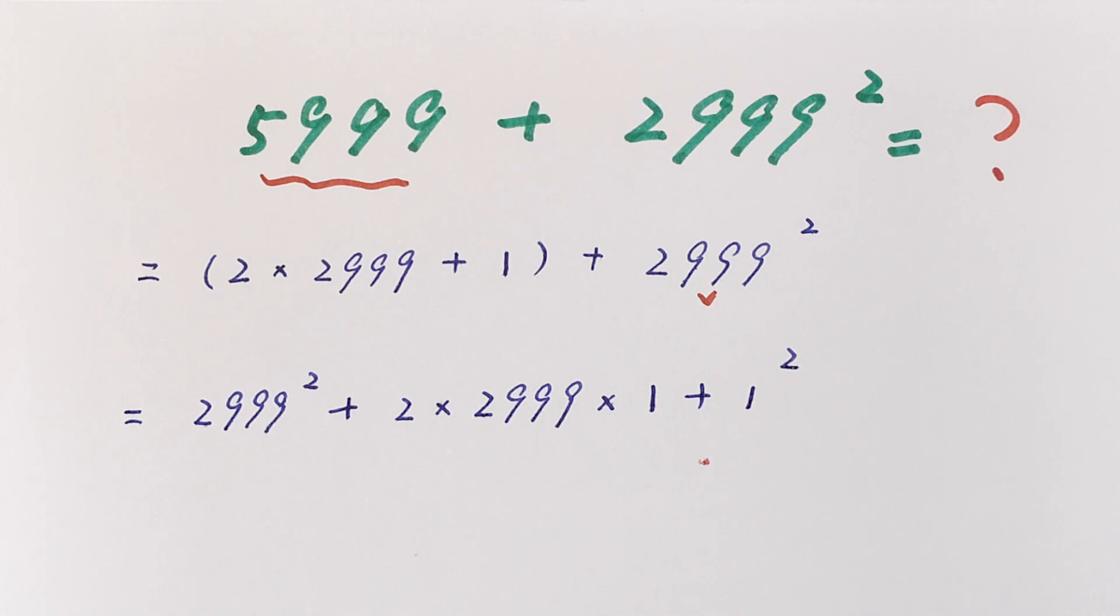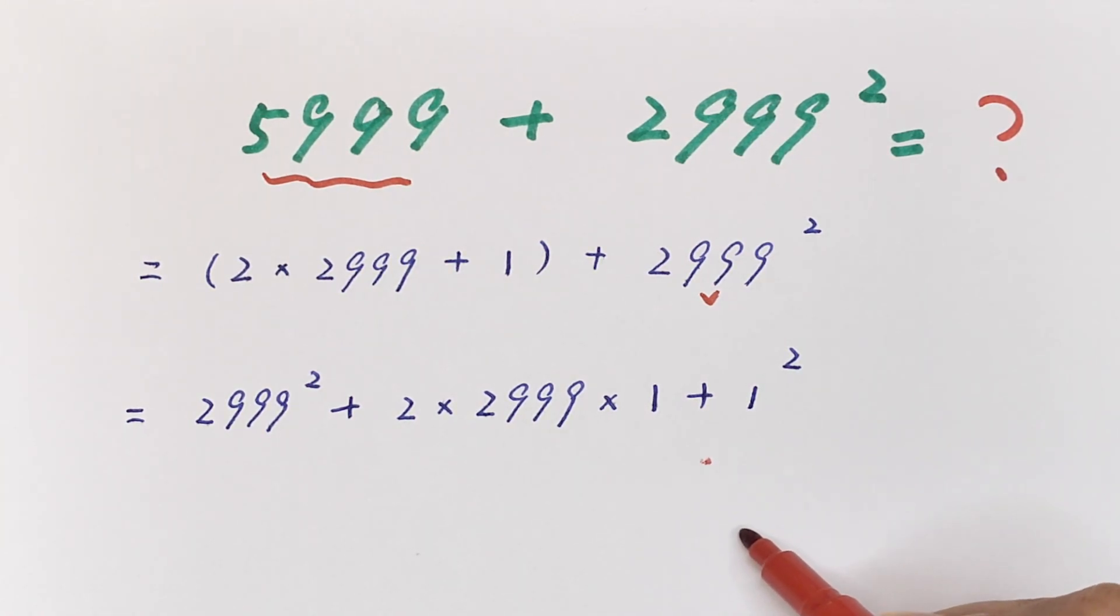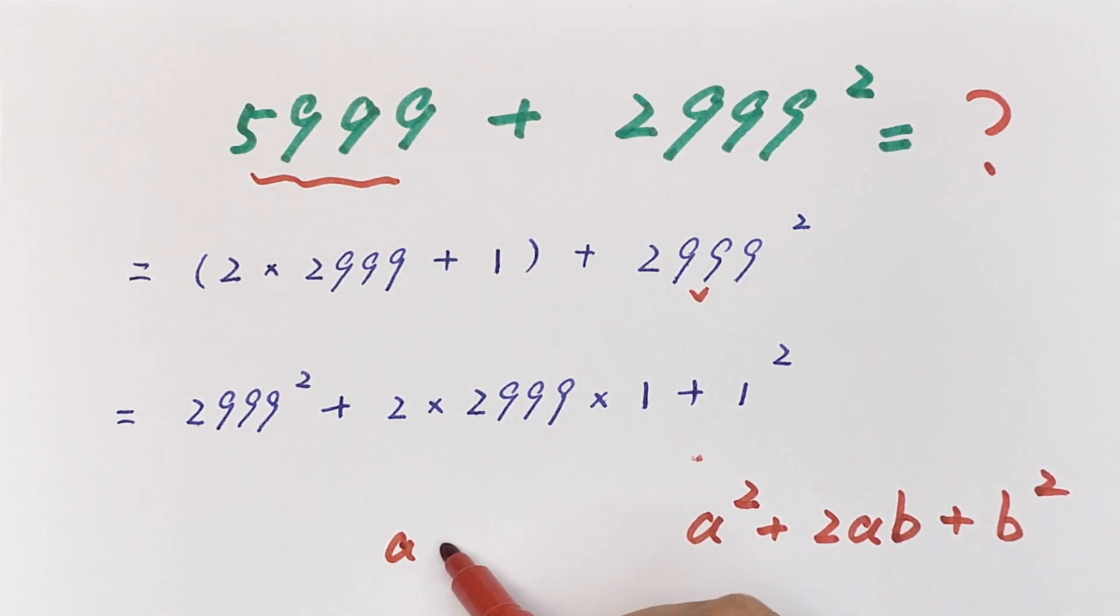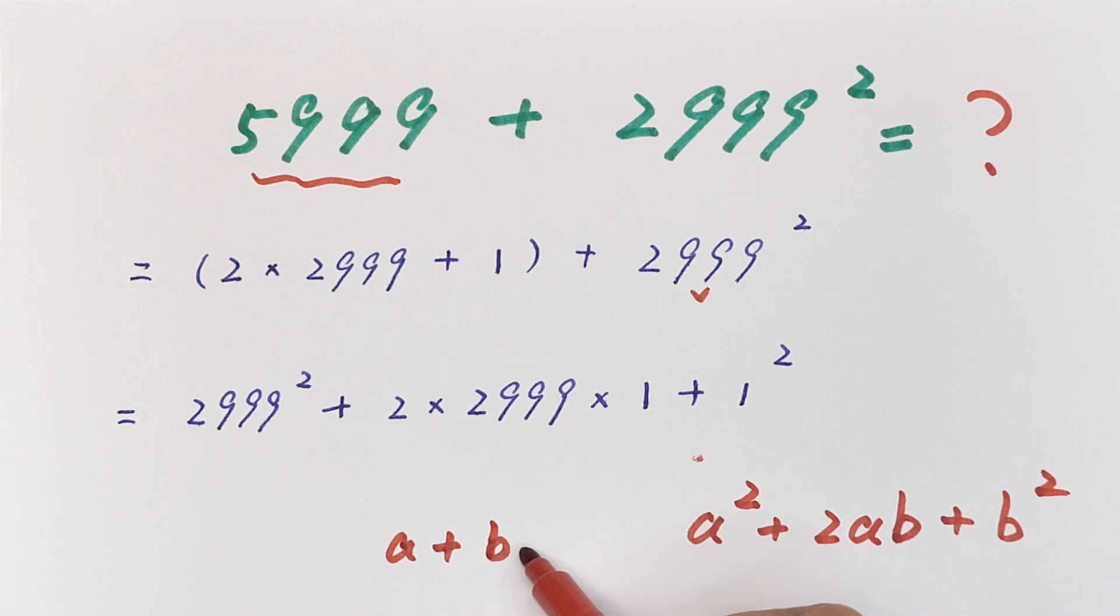Okay, do you know what I'm doing? Look, this equation is the same as a square plus 2 times a times b plus b square. Yes, we have a perfect square: a plus b bracket square.